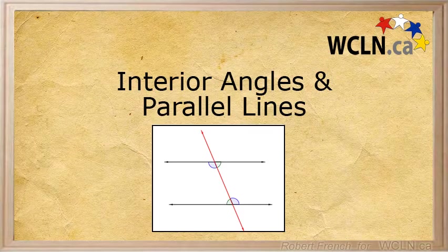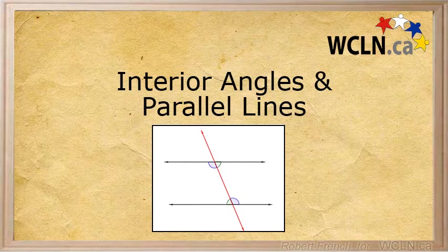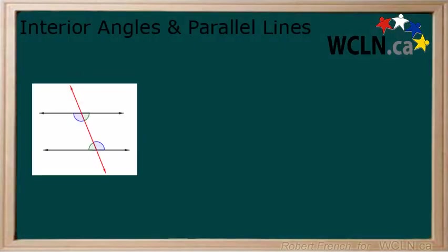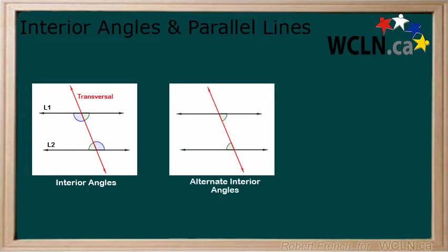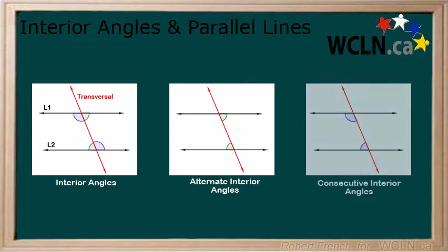In this tutorial we will be learning about interior angles created by parallel lines. You have already learned that interior angles are angles that occur inside a shape, and they can be created when two lines are crossed by a transversal line. Alternate interior angles are found on opposite sides of the transversal, and consecutive interior angles occur on the same side. There are a couple of cases with interior angles created by parallel lines that we will look at now.